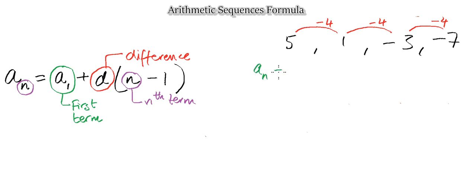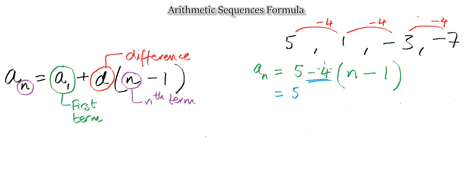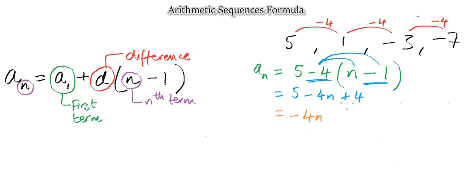A sub n equals a₁, which is five, and the difference is negative four. So: five plus negative four, open bracket, n minus one, close bracket. Expanding: five minus four n, then minus four multiplied by minus one — being very careful, minus four times minus one gives positive four. Adding like terms: five plus four gives nine, so the expression is negative four n plus nine.